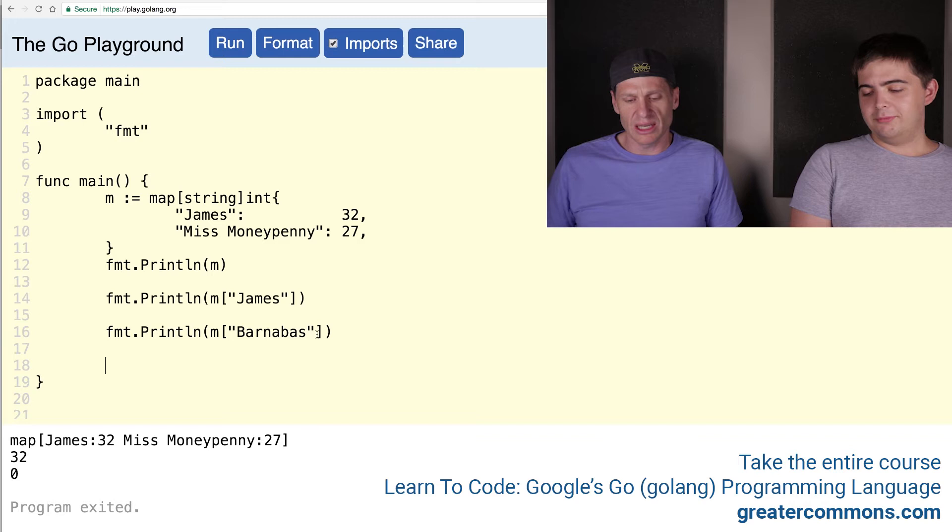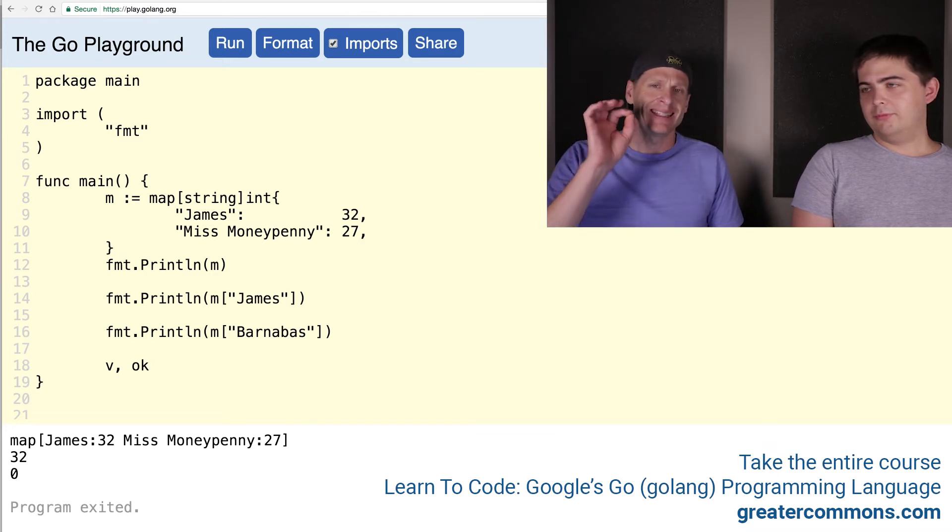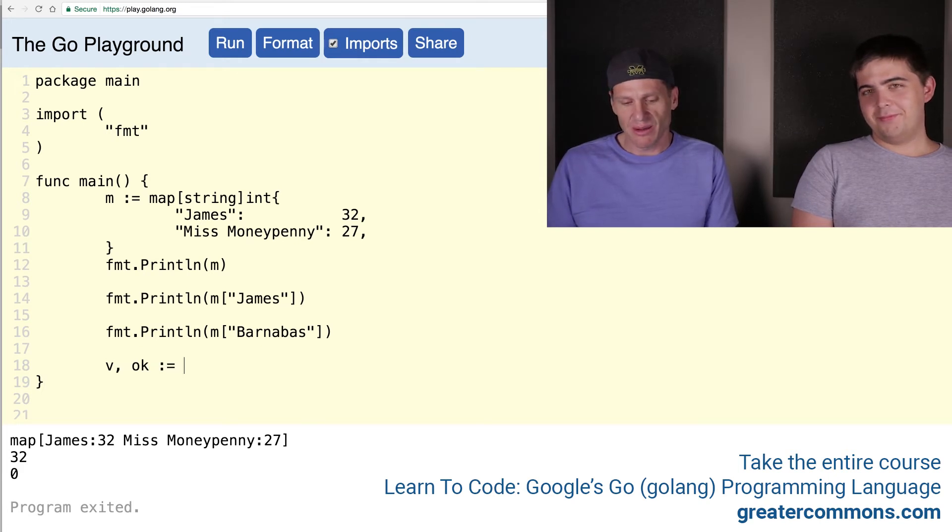So let me show you how to check that. And so what we could do is instead of just printing the value out there, we could ask for the value and we can also ask for whether or not this value actually exists in the map. And often, the identifier for the variable to store this check is ok. And this is called, we're going to get to the, this is the comma okay idiom. And it's called the comma okay idiom because look, comma okay. And so when we check that map, we could do it like this.